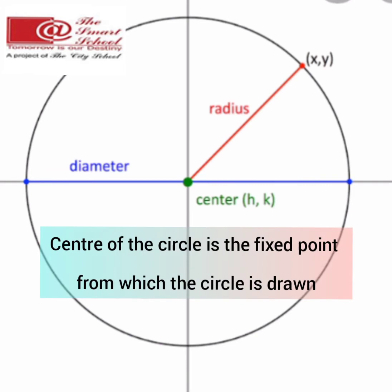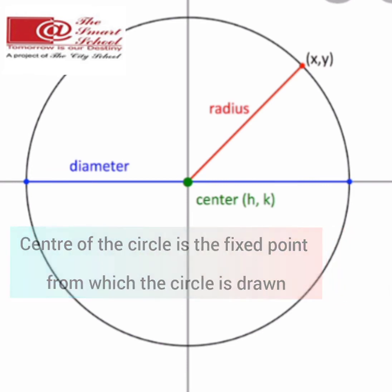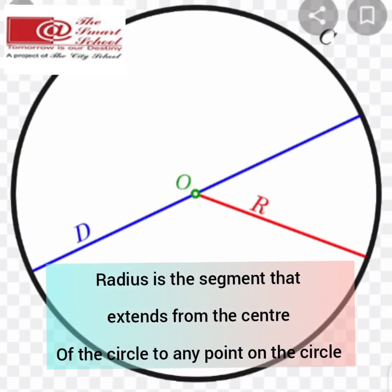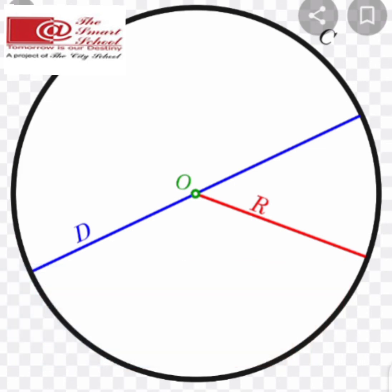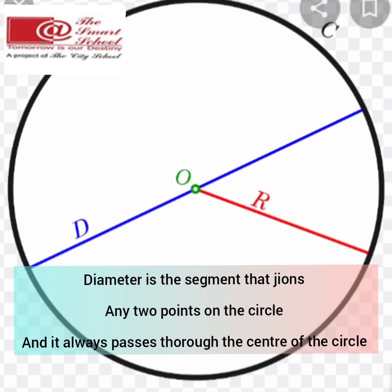The center of the circle is the fixed point from which the circle is drawn. The radius is the segment that extends from the center of the circle to any point on the circle. The diameter is the segment that joins any two points on the circle and it always passes through the center of the circle.